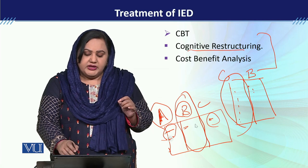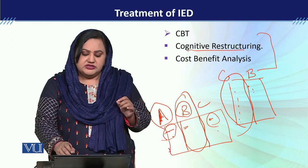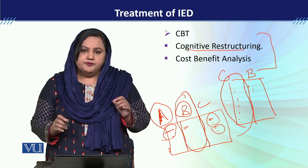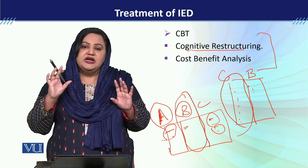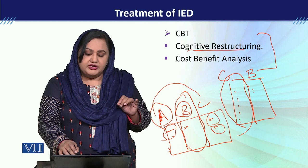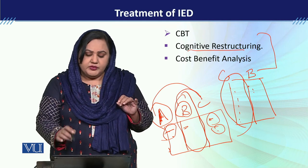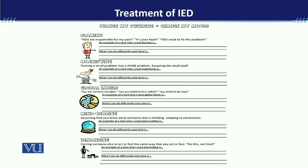لیکن اگر آپ کا thought pattern change ہو جائے تو جو consequences ہیں وہ change ہو سکتے ہیں۔ That is something کہ we cannot change A, but we can change the thoughts, which ultimately brings change in C. That is not something that A leads to C — that is something that B leads to C. We need to tell this thing to the child تاکہ اسے سمجھ آئے کہ اس کا thought process کس طرح consequences develop کرتا ہے۔